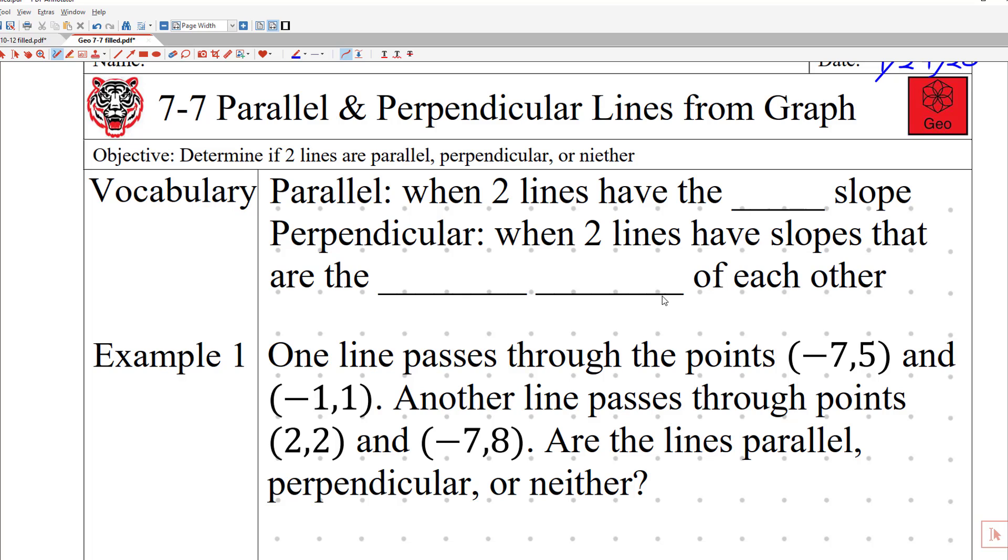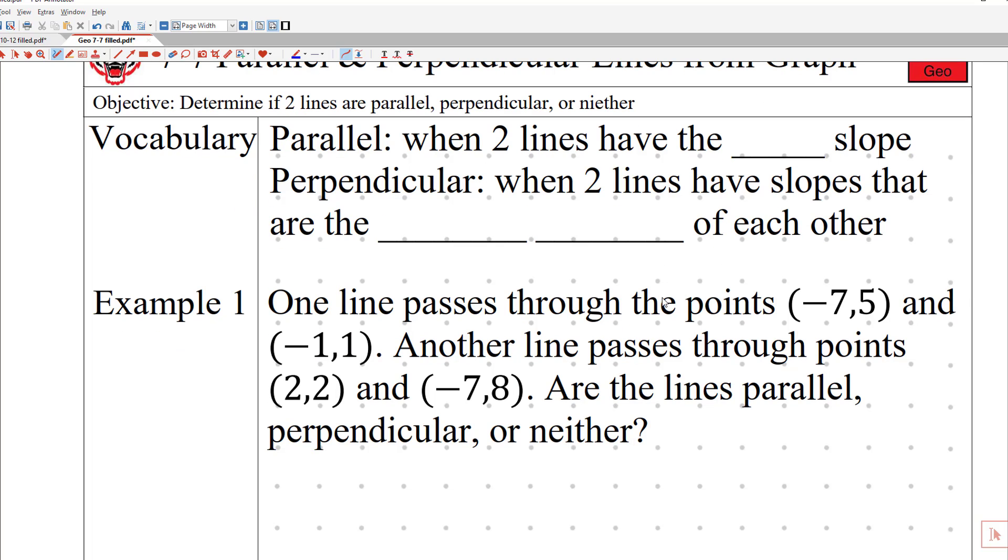So before we even start solving these, what does parallel mean? In terms of today's lesson, I'm defining it as when two lines have the same slope. If you want to draw a picture of parallel lines, you can have two lines that look like an equal sign. It doesn't matter how far apart they are. It just matters that they are going in the same direction and they never touch each other.